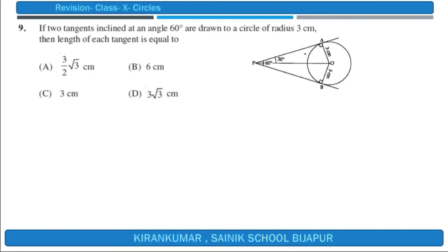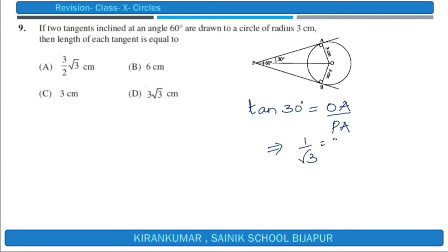We have a circle and two tangents inclining at an angle of 60 degrees. If we join the external point P and the center O, then angle APO will be equal to 30 degrees. With respect to this 30 degrees, I can consider tan 30° = OA upon PA. This implies 1 upon root 3 equals 3 by PA, hence PA equals 3√3 centimeters. Option D is the right answer.